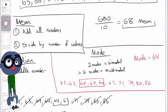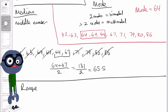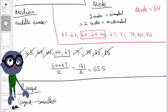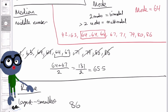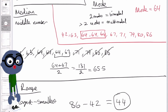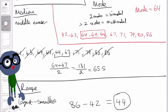The final part is the range. The range is simply your largest value take away the smallest. Our largest value is 86 and our smallest is 42, so 86 minus 42 gives us 44. That is the range for this set of numbers. I hope this example was clear — let's now dive into a set of questions.